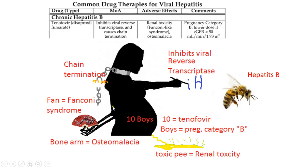For Fanconi syndrome, her right hand is going backwards and is all bony, holding a fan — so the fan represents Fanconi syndrome and the bone arm represents osteomalacia. For chain termination, she has a chain around her neck that's being cut off.